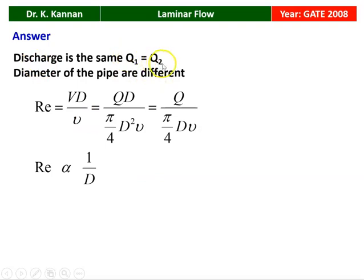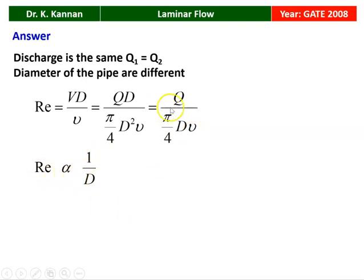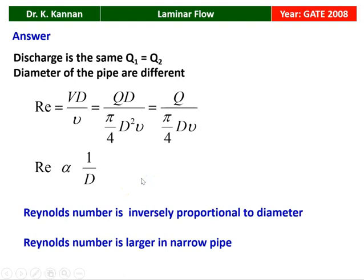We have two pipes of different diameters with the same properties and same volume flow rate. Reynolds number = Vd/ν. Substituting velocity = Q/A = Q/(π/4 · d²), we get Re = 4Q/(π·d·ν). So Reynolds number is proportional to 1/diameter. For the same discharge and same fluid properties, when the diameter increases, Reynolds number decreases. Therefore, for smaller diameter, Reynolds number is larger — that is the answer.